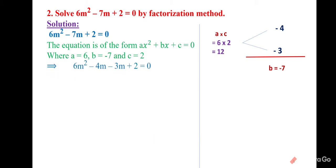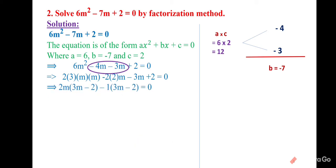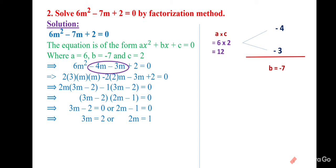So −7m can be split as −4m − 3m. From the first two terms, 2m is common giving 2m(3m − 2). From the last two terms, −1 is common giving −1(3m − 2). Both brackets are (3m − 2). So (3m − 2)(2m − 1) = 0, giving m = 2/3 or m = 1/2.